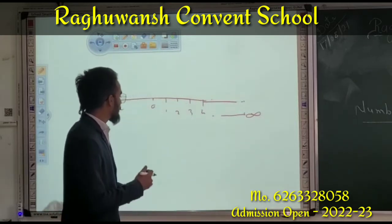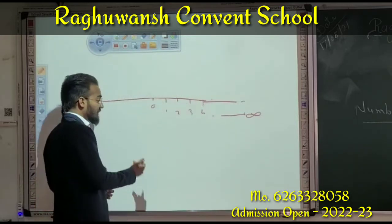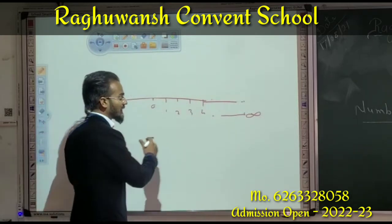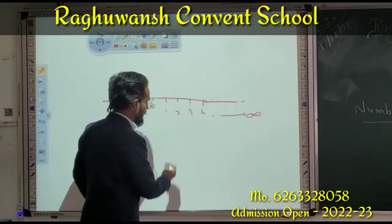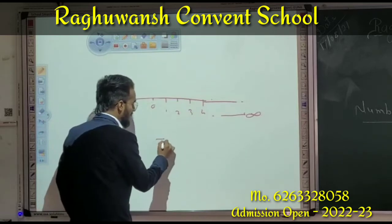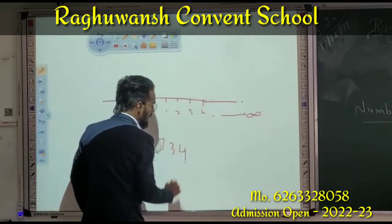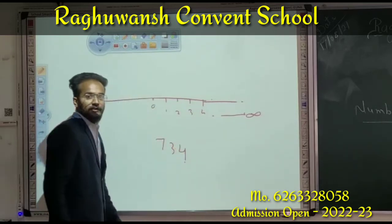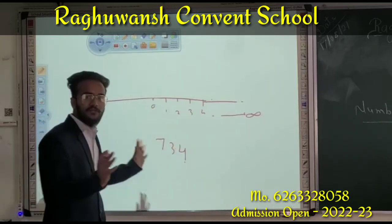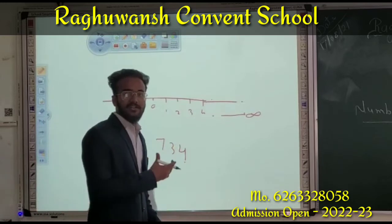We can compare all the numbers. If you write the number, we can write it in the number form. Numbers can be broken down — this is called notation.